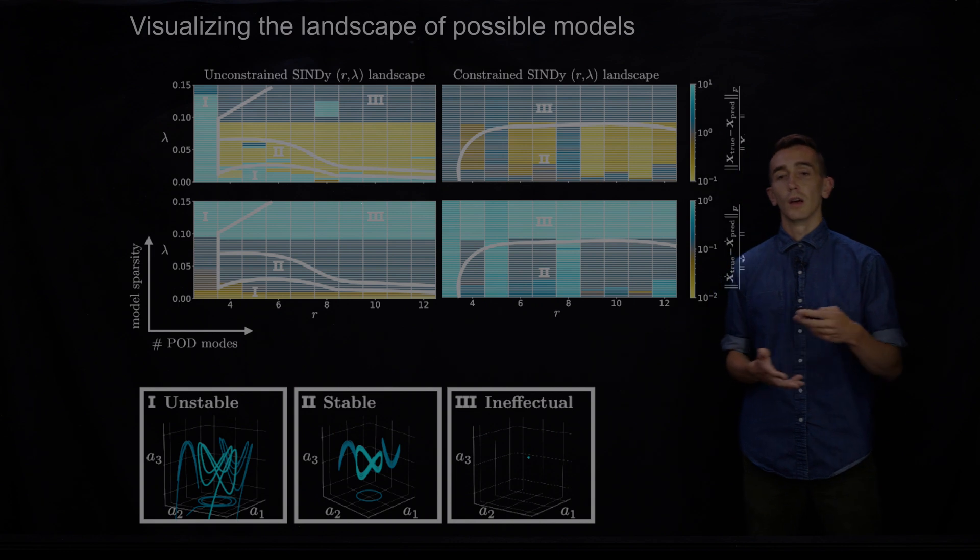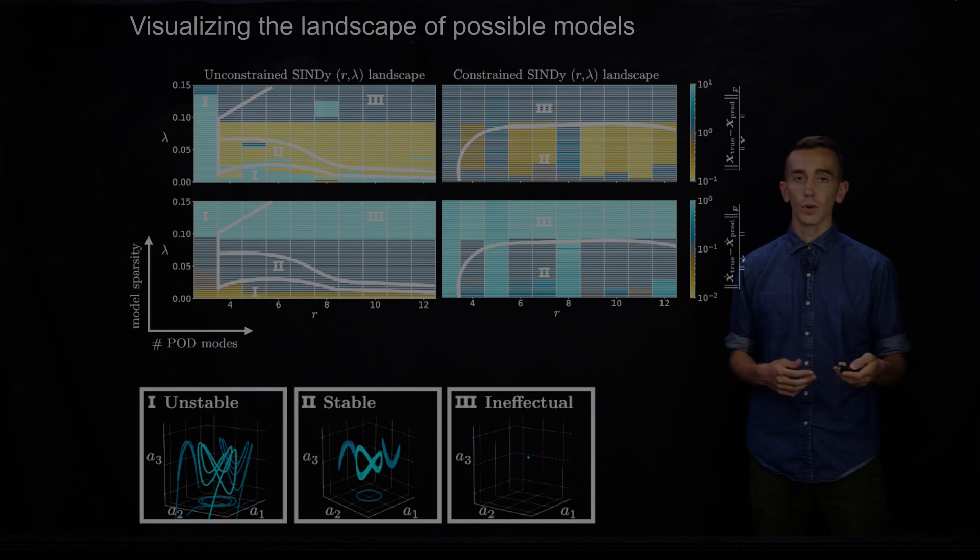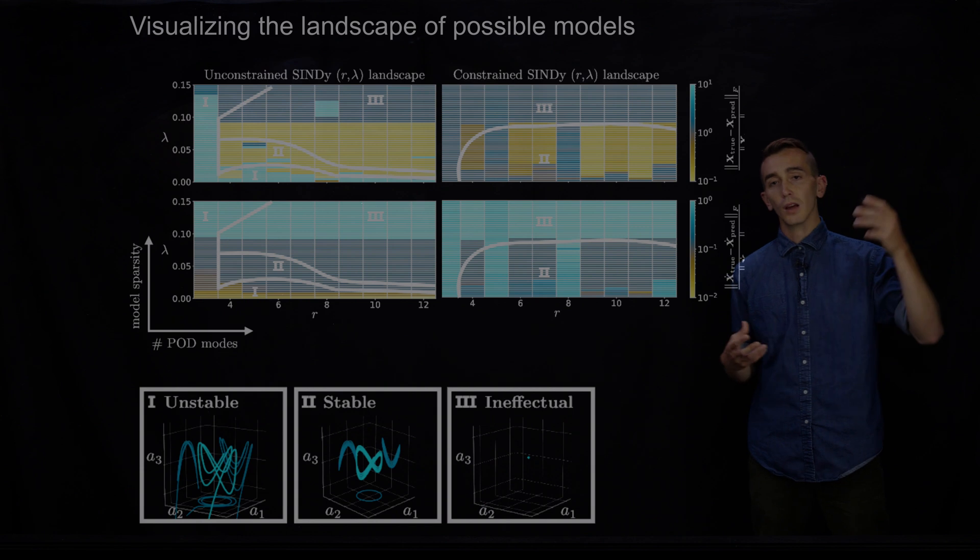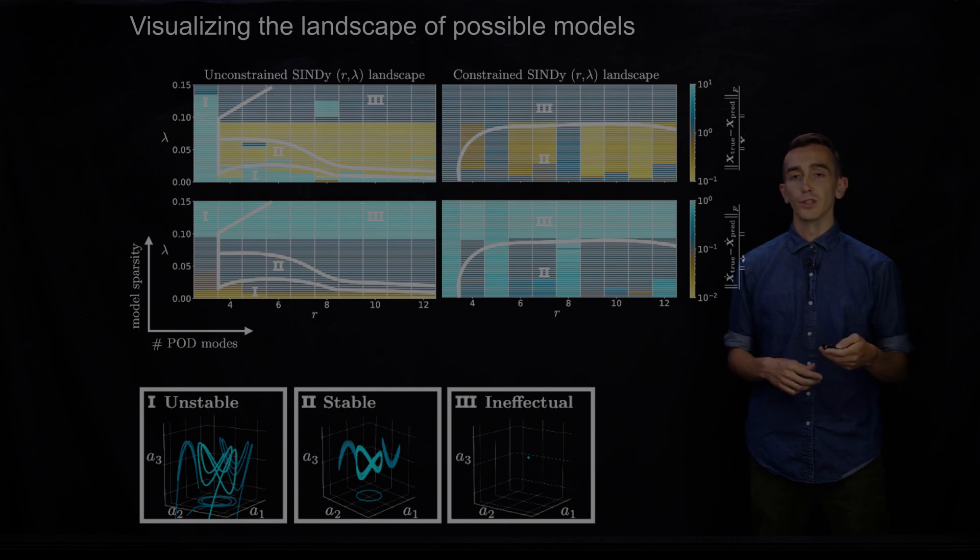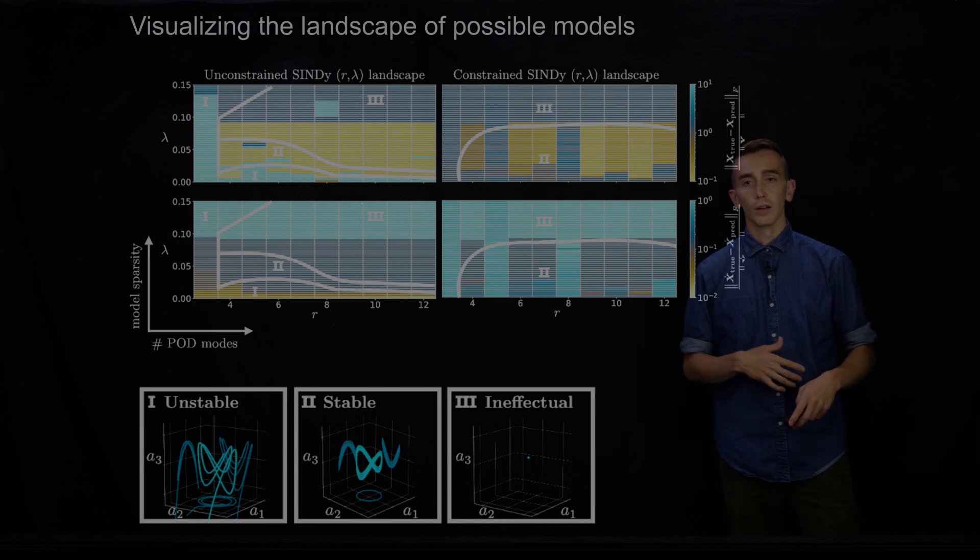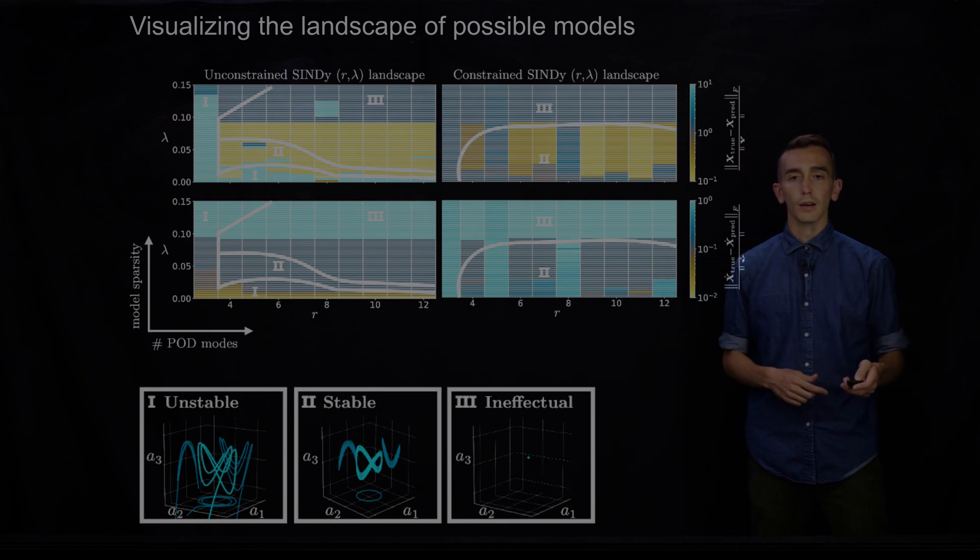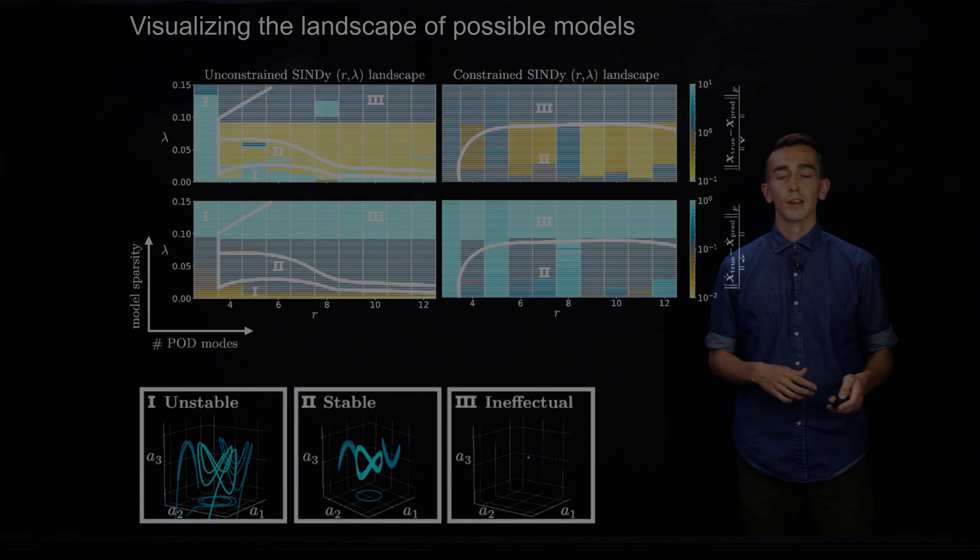We can use these hybrid models where you're sort of building in some physics constraints but letting the data guide you about how it's evolving in time. And we can use these models to fill in these rungs that I mentioned in the plasma hierarchy. So we're excited about this. We hope that folks keep working in this direction and I appreciate you watching today. So thanks a lot.